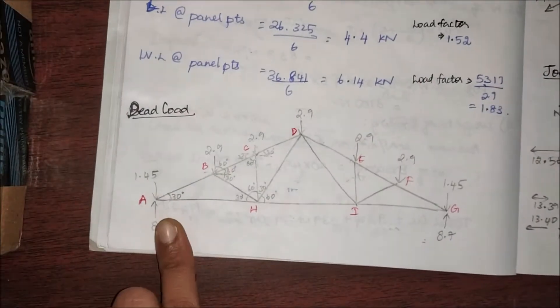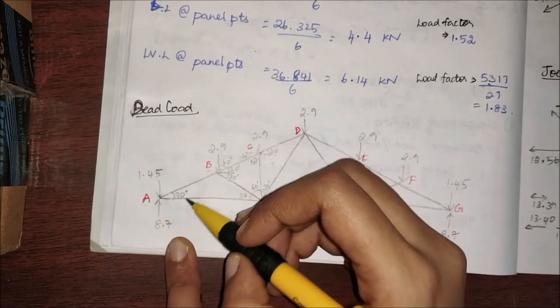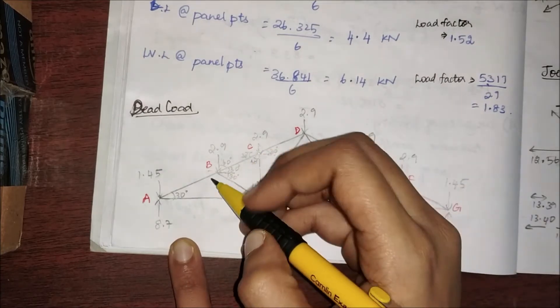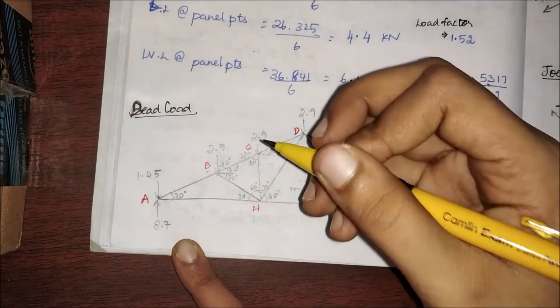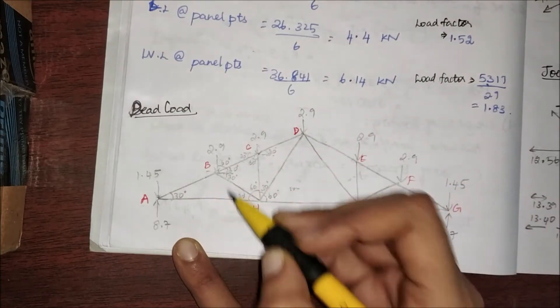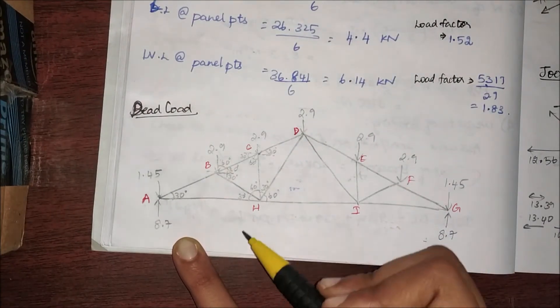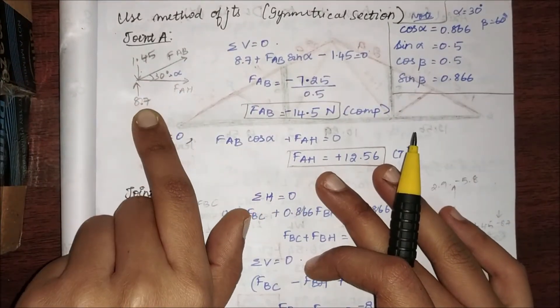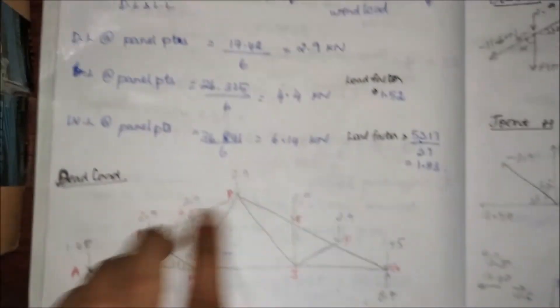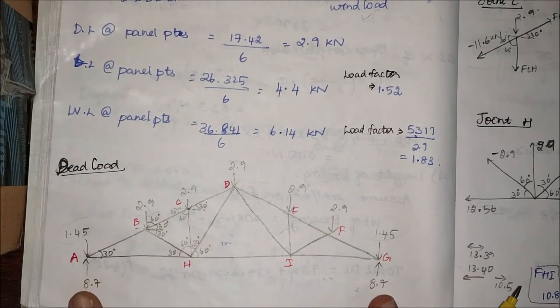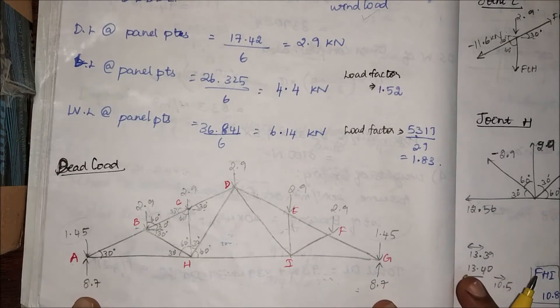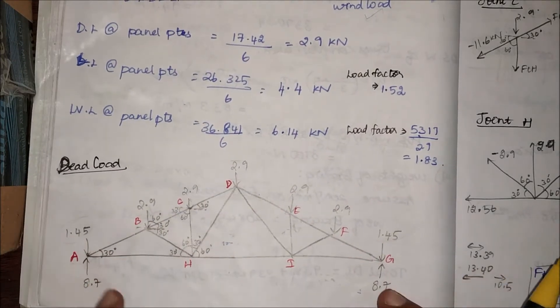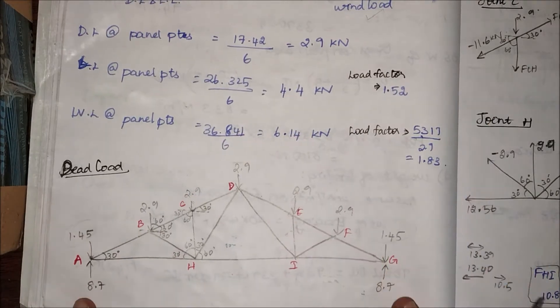So what is my joint A? This is my joint A. For the method of joints the rule is that the maximum number of unknown forces you can have is two. You can see here: force in AB I don't know, and force in AH I don't know, so I have only two members. A closer view: 8.7 is my load acting. Since it is a simply supported and symmetrical truss, I'm going to divide the total load by two — which is 8.7 and 8.7.